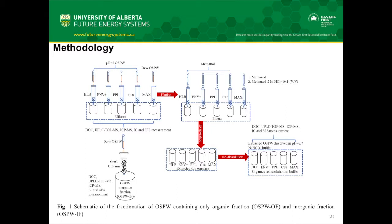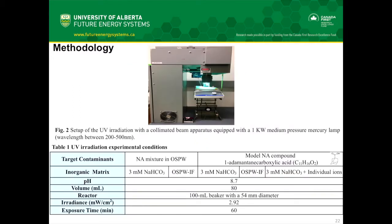For the extraction of the organic fraction, we used solid-phase extraction processes and tested different cartridges with different types of solvents to see which is most efficient. For the isolation of inorganics, we packed a granular activated carbon column ourselves. When OSPW is passed through the column, the organic contaminants are absorbed by the GAC and the effluent is collected as the inorganic fraction. The UV irradiation test was conducted in a collimated beam apparatus equipped with a medium-pressure mercury lamp with a wavelength between 200 to 500 nanometers.